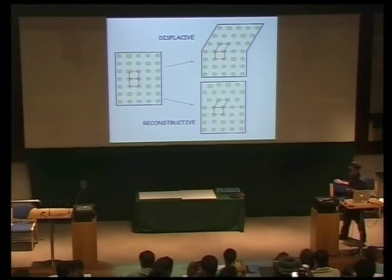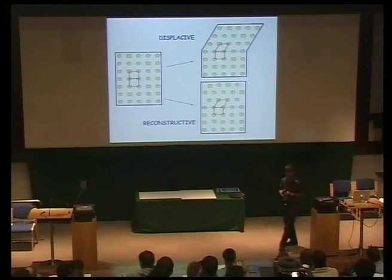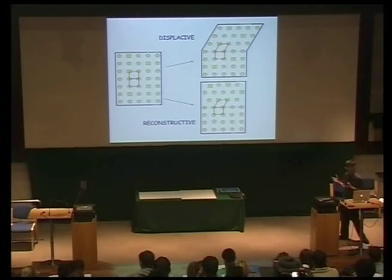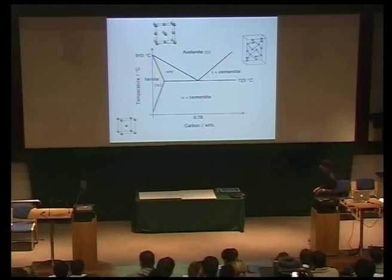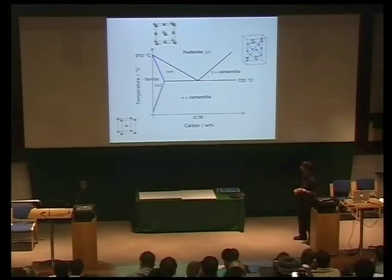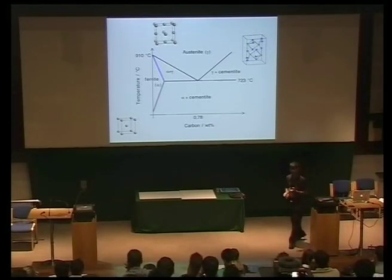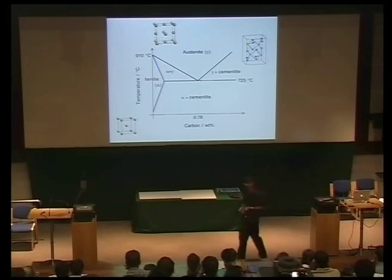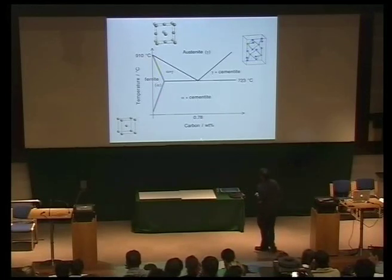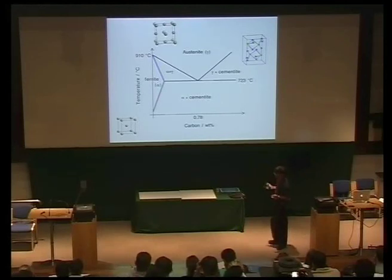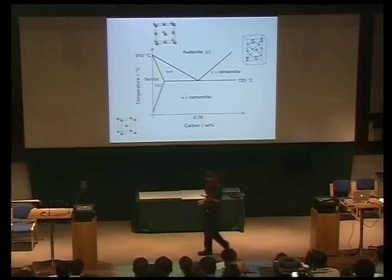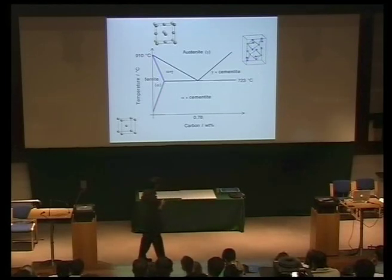Let's look at a few examples of these two mechanisms of transformation, starting with the reconstructive mechanism, which requires a lot of diffusion. It can only happen at temperatures in iron above approximately 500 to 600 degrees centigrade. This is a part of the iron-carbon phase diagram. Carbon has a profound effect on the properties of iron. And this is a eutectoid reaction in which the austenite here will decompose into a mixture of ferrite and cementite. Cementite is simply a compound of iron and carbon — Fe₃C — with an orthorhombic crystal structure.